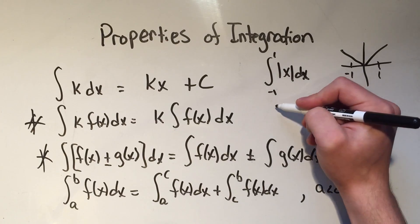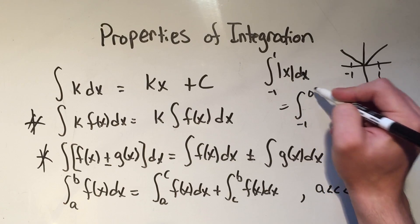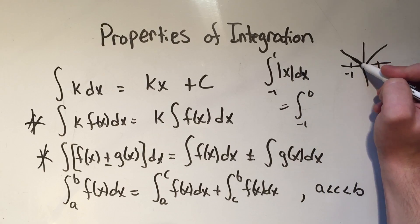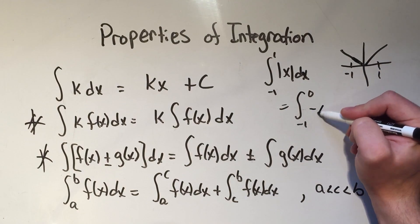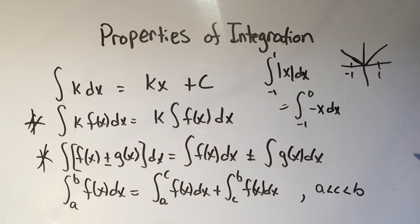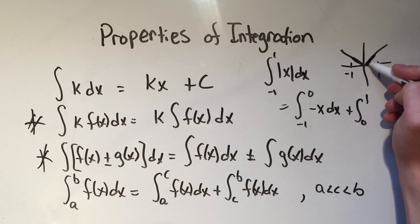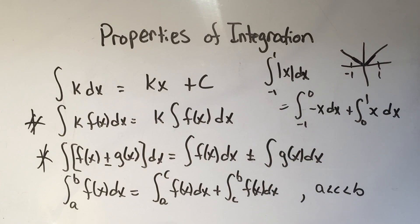So what you would do is you would go from negative one to zero. That would be this chunk right here. And from negative one to zero, that's the function negative x. And then you would add on zero to one. That would be this chunk right here, and that would be positive x dx. So that's an example of when you would want to use this last property.